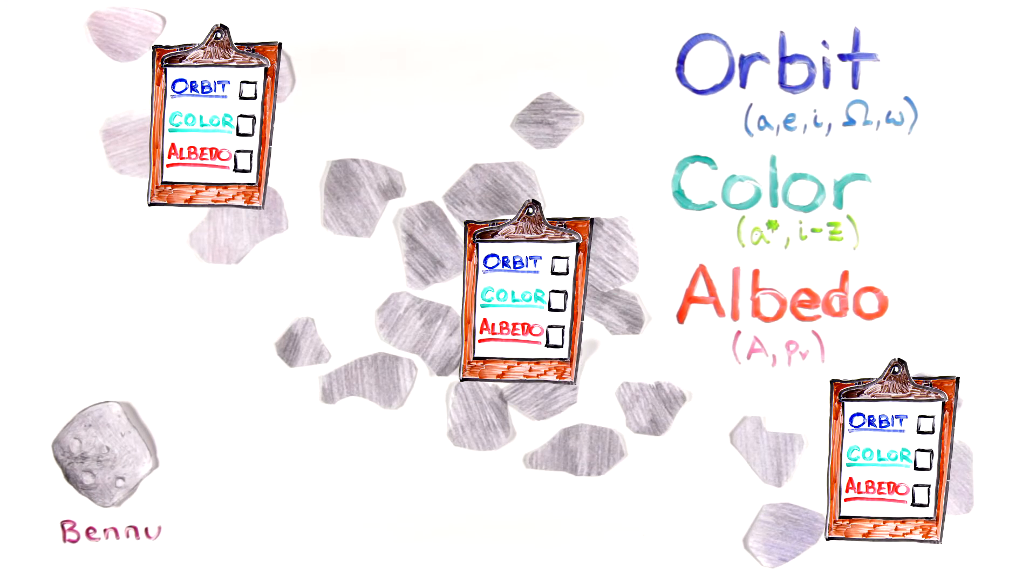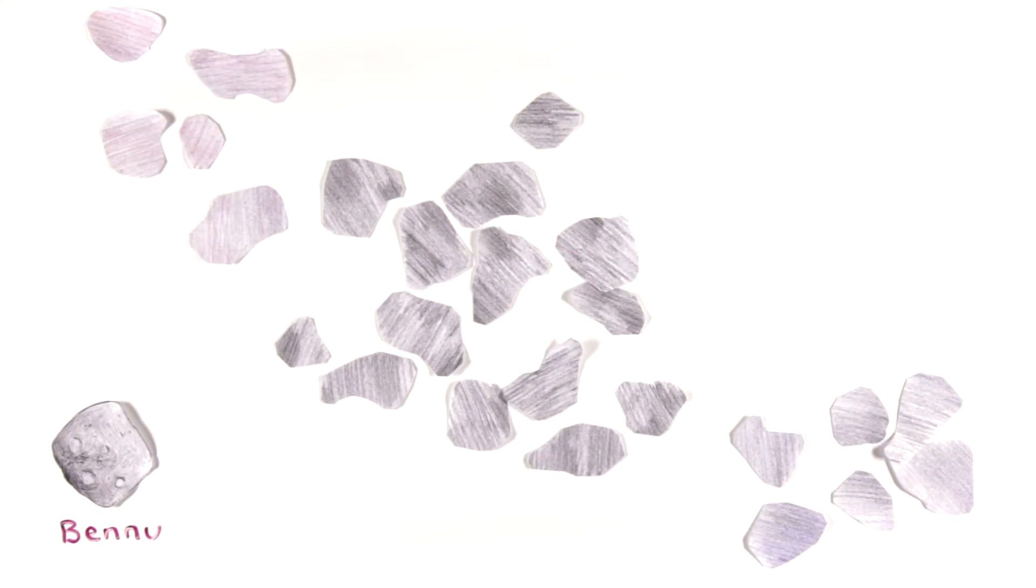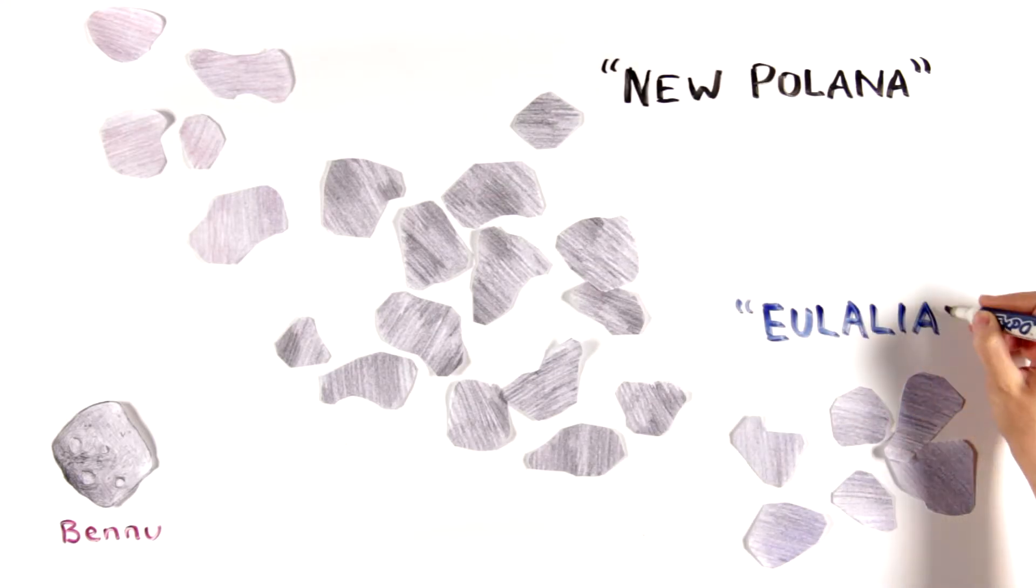Bennu's color and albedo match those of several families in the asteroid belt. Of those families, the two whose orbits are most likely to send asteroids like Bennu toward the Earth are known for now as the New Polanna and Eulalia families.